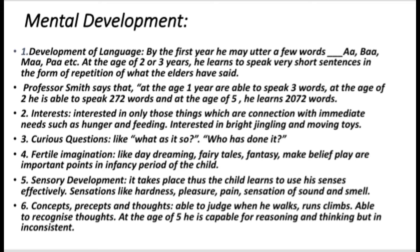The child at birth can only cry as an expression of emotion, pleasure, or pain. Up to 6 months, crying indicates recognition of some new situation. By the first year, he may utter a few words like 'ba', 'ma', etc. At 1.5 years, language development becomes more rapid. At age 2 or 3, he learns to speak very short sentences, usually repetitions of what elders have said. Professor Smith states that at age 1 the child speaks 3 words; at age 2, 272 words; and at age 5, he learns 2,072 words.